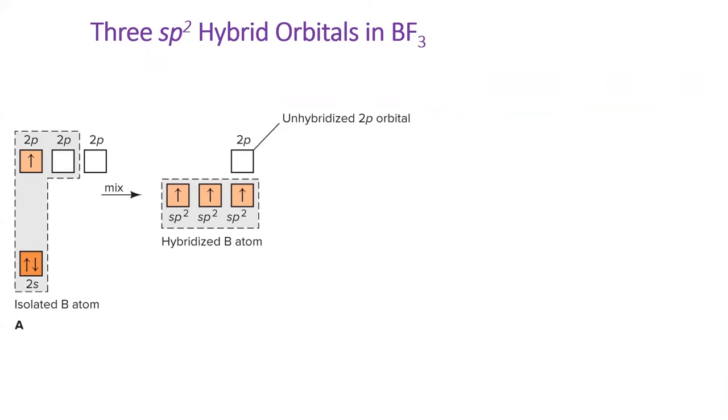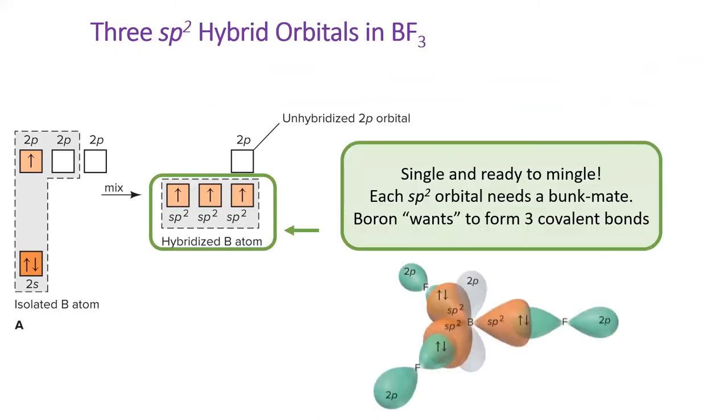Continuing forward, we see that one S and two P orbitals hybridize into three SP² orbitals. With boron, each SP² orbital has one unpaired electron, and boron forms three bonds in a geometry called trigonal planar, which represents a flat triangle.